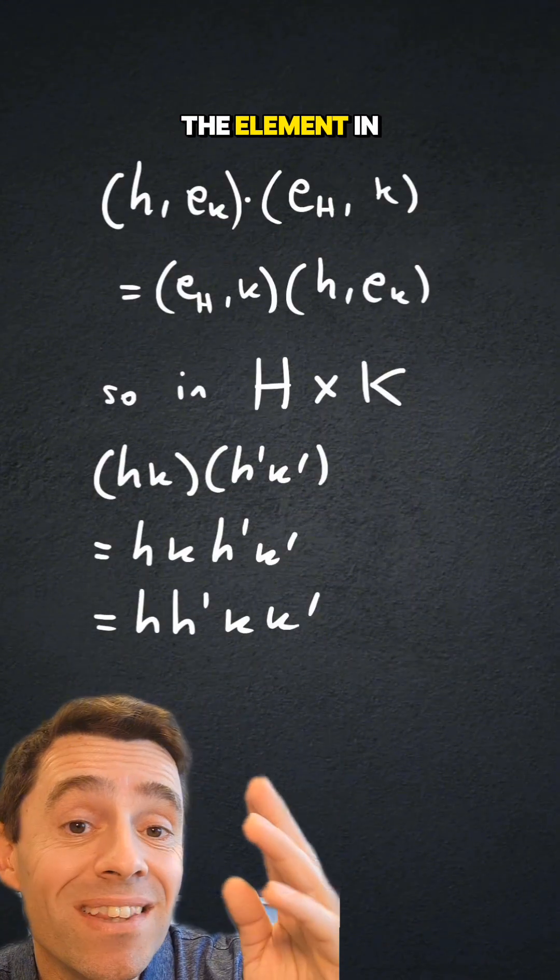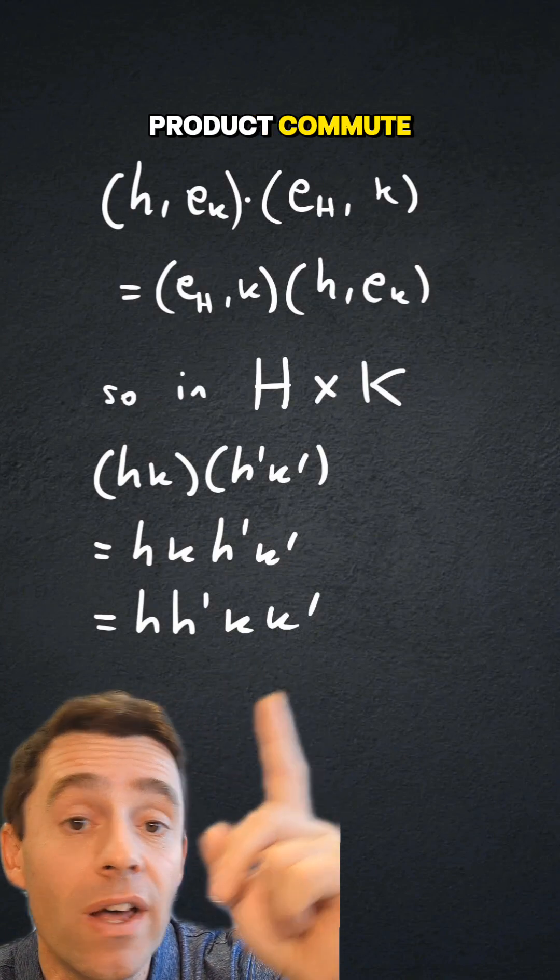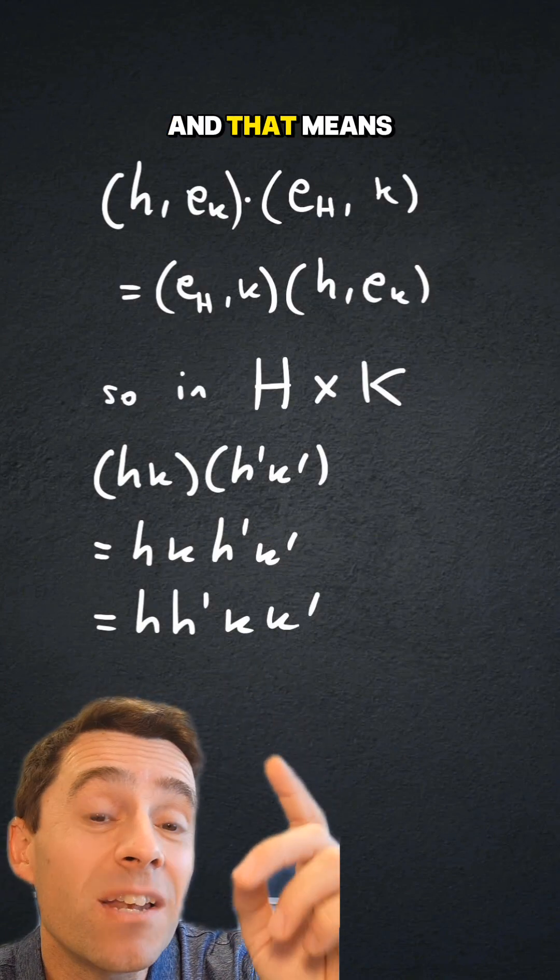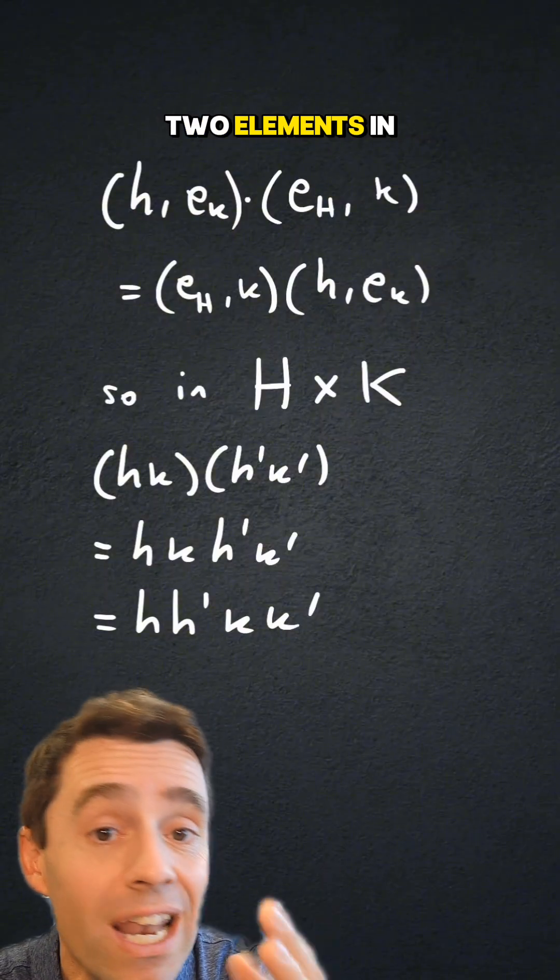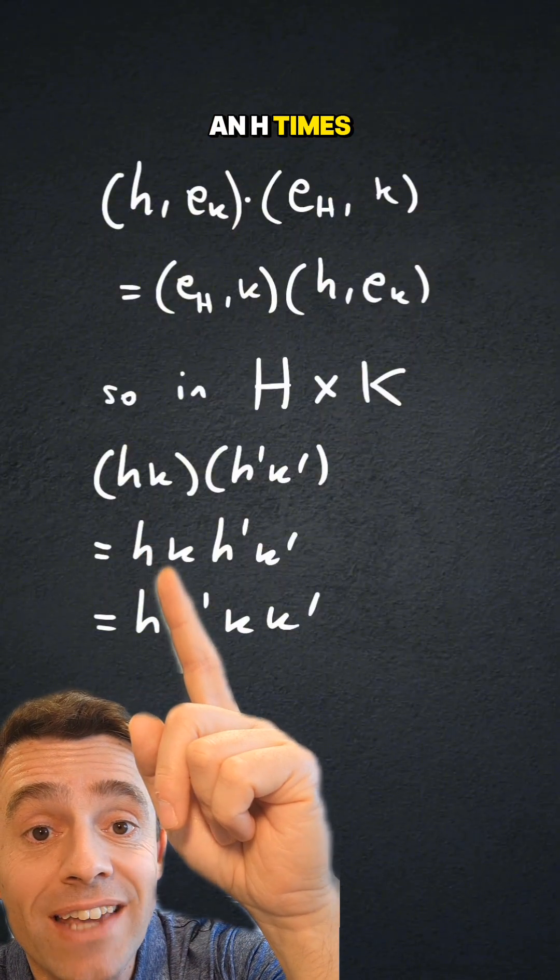Moreover, the elements in h and the elements in k within g, within the direct product, commute, as I wrote above. And that means that if I have to multiply two elements in g, every element in g will be an h times k,